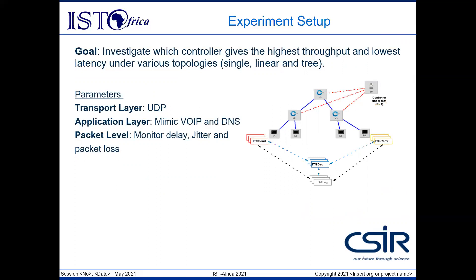To investigate the performance differences of the two controllers, each topology was configured to feature a total of eight hosts, where the first host was configured as the flow generator and the last host was configured as the receiver. Voice over IP and DNS flows were generated towards the destination, and the transport layer protocol was set to UDP. The metrics measured included one-way delay, jitter, and packet loss. Each test was repeated 10 times and an average was used for the results. The number of worker threads was kept at one for the duration of the experiments.